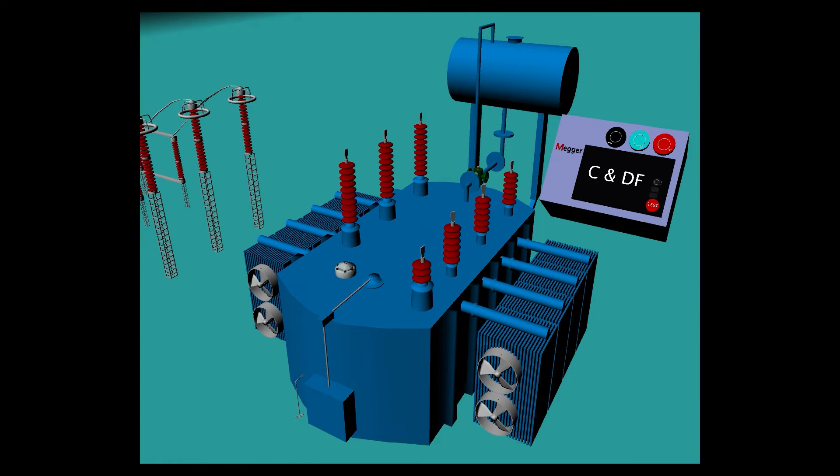How is C and DF test performed? First short all the HV windings together then short all the LV windings together. Connect one lead of the C and DF test set with HV windings and another lead with the LV windings and perform the test.